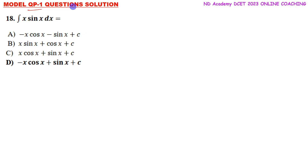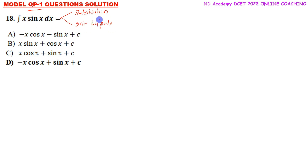Model question paper one, second question: integration of x sin x. There are two methods — substitution method or integration by parts. Since we have x as a function and sin x as another function beside it, and the derivative of x gives 1 and derivative of sin x gives cos x, we go for integration by parts.